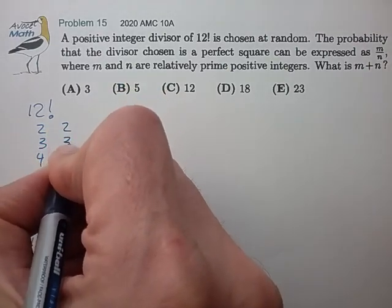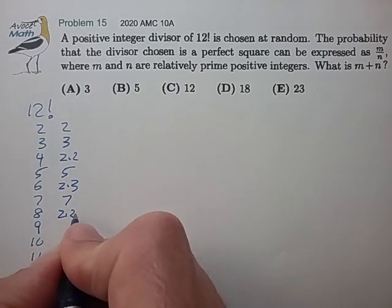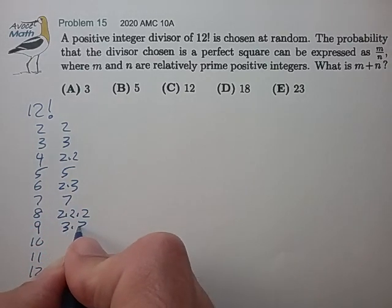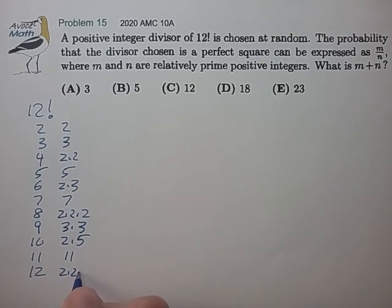That's a 2, 3, 2 times 2, 5, 2 times 3, 7, 2 times 2 times 2, 3 times 3, 2 times 5, 11, 2 times 2 times 3.